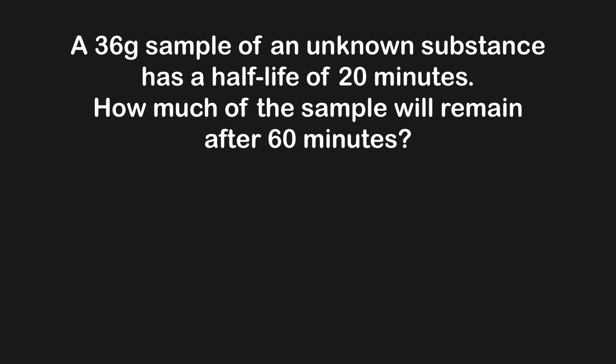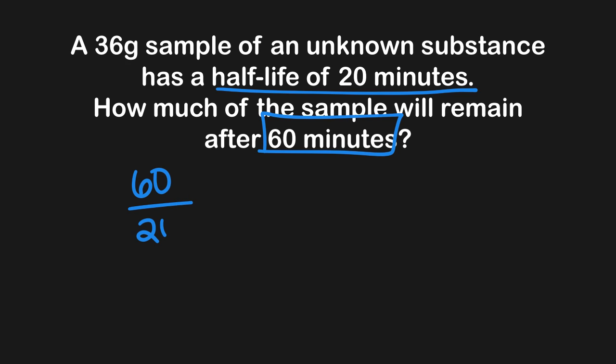Our first question asks: a 36 gram sample of an unknown substance has a half-life of 20 minutes. How much of the sample will remain after 60 minutes? Our first goal is to get to the key — the number of half-lives. If they give us a half-life, we'll take the total amount of time and divide it by the length of time it takes for a single half-life. This tells us how many half-lives we have overall.